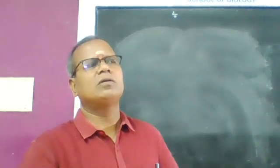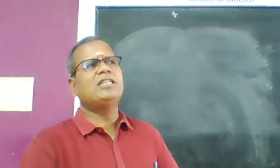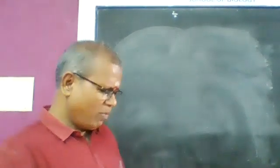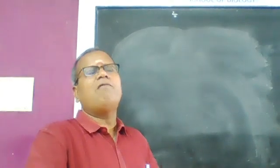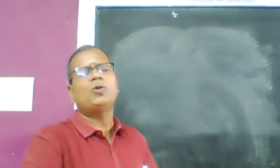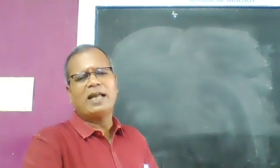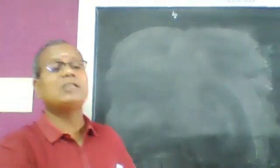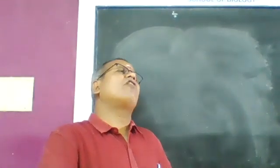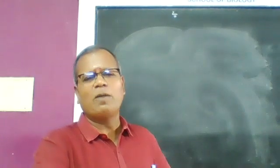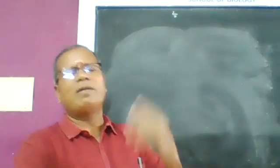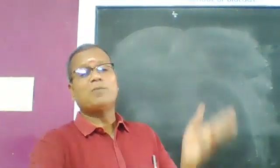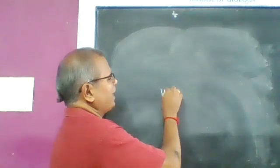Key historical figures: the cell was discovered by Robert Hooke, bacterial cells by Antonie van Leeuwenhoek, cell theory was proposed by Schleiden and Schwann, the modern cell theory by Rudolf Virchow, and the term 'bacteria' was coined by Ehrenberg.